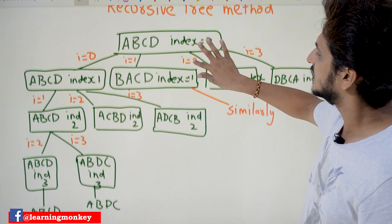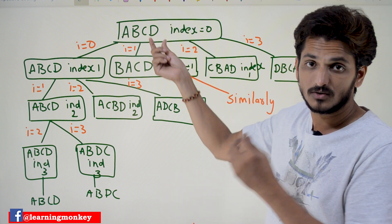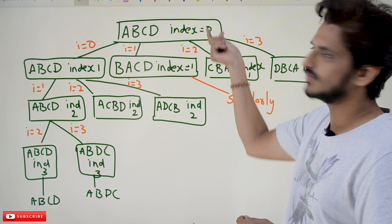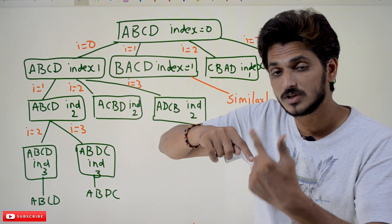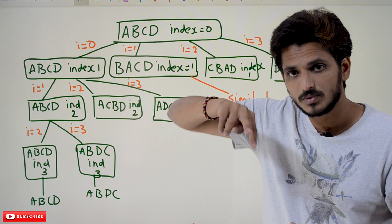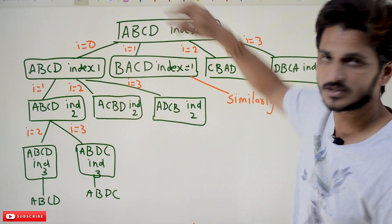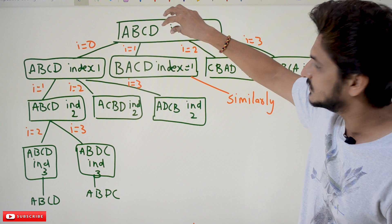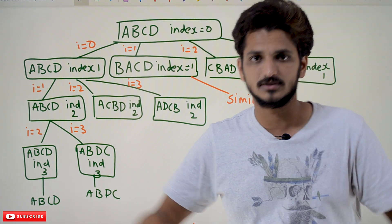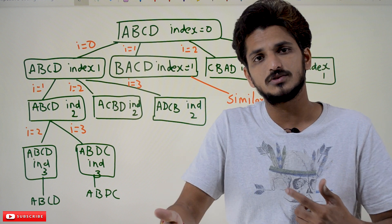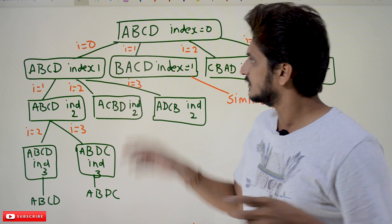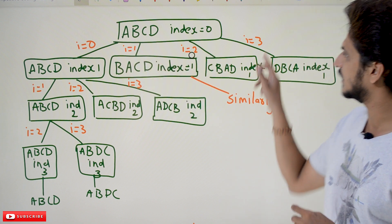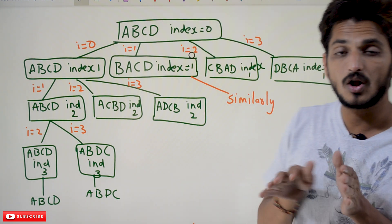Now coming to our actual example, the first function we are going to call — we are sending input as string ABCD and we are taking an index value. Based on the index value, we are going to provide all the permutations, all the different possibilities. When we call this first function, we are sending input as ABCD and index is equal to zero. This function is going to call four different functions. If you want to call the same function four times, you need a loop. So for the loop: for i equal to zero, one, two, three — this function is called each time. So this function is going to call four different functions.